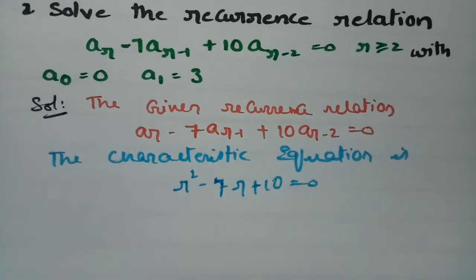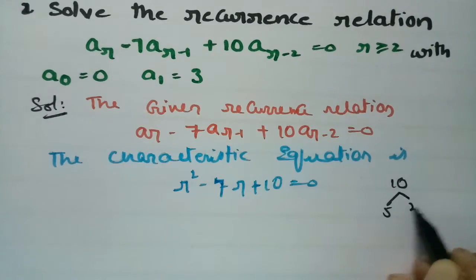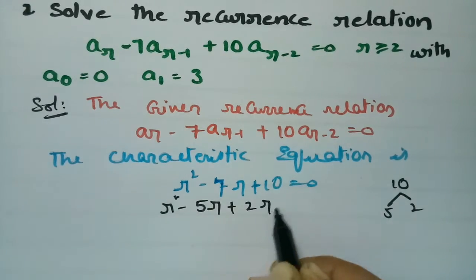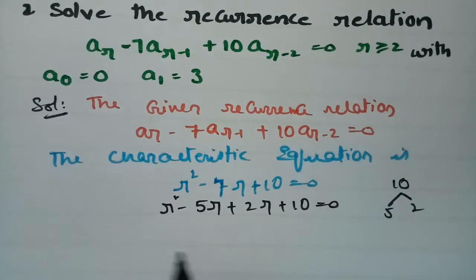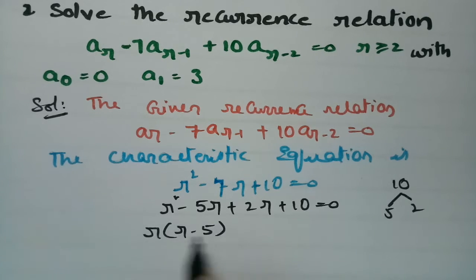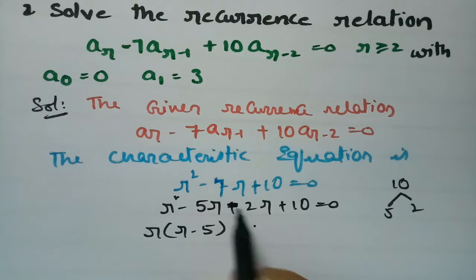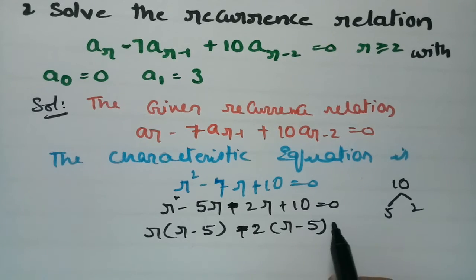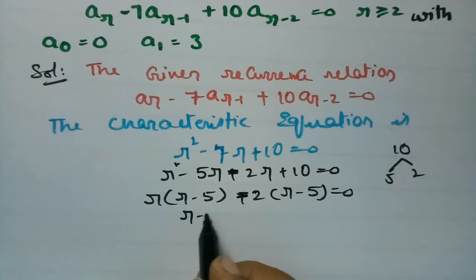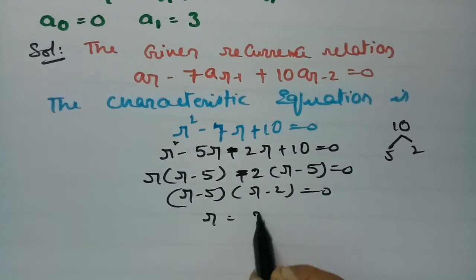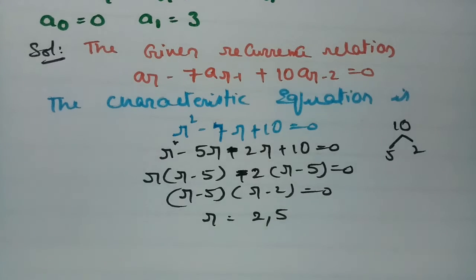We solve R² - 7R + 10 = 0. The factors of 10 are 5 and 2, and 5 + 2 = 7. So: R² - 5R - 2R + 10 = 0. Taking R common: R(R - 5), and taking -2 common: -2(R - 5). This gives (R - 5)(R - 2) = 0, so the roots are R = 2 and R = 5.